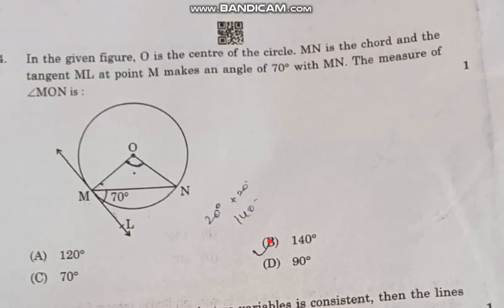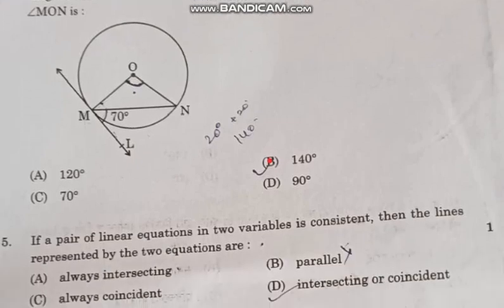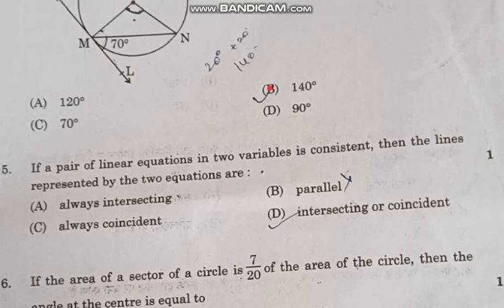Question number 4: In the given figure, O is the center of the circle, MN is a chord, and tangent ML at point M makes an angle of 70 degrees with MN. The measurement of angle MON is correct answer option B, 140 degrees.